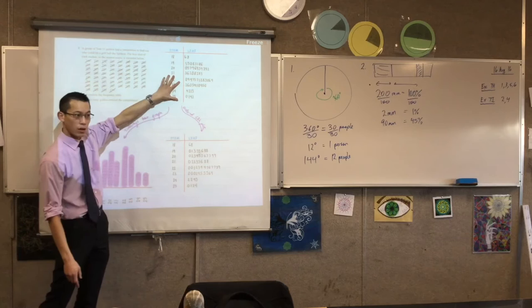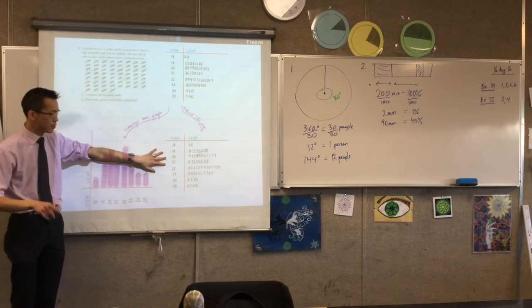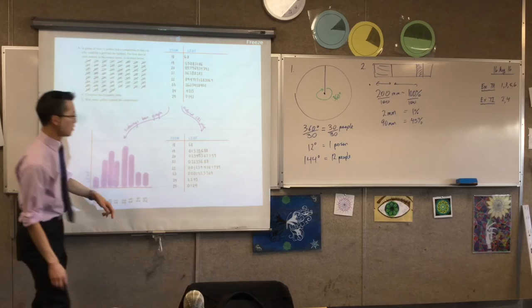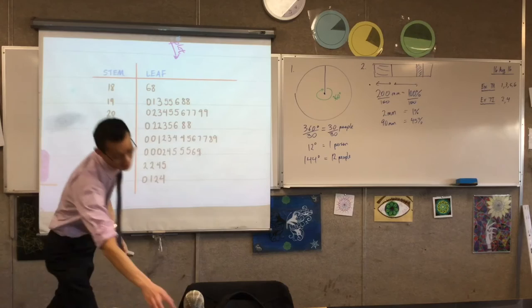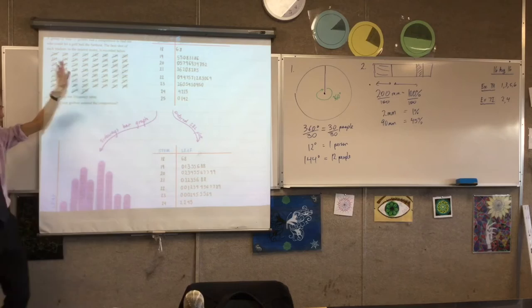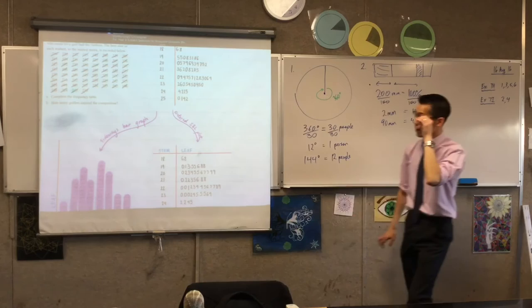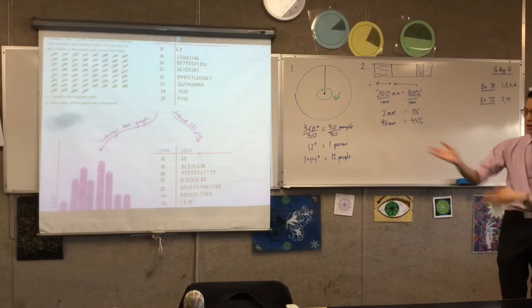Sometimes from your first stem-and-leaf plot, they might ask you to create an ordered stem-and-leaf plot. The difference is quite subtle — when you look at the numbers, I've just arranged all of these in ascending order. This is a really useful skill. I think it's easiest to put it out of order first, make sure you haven't missed any, and then put them in order. This will become really important next week when we look at quartiles, deciles, and percentiles.